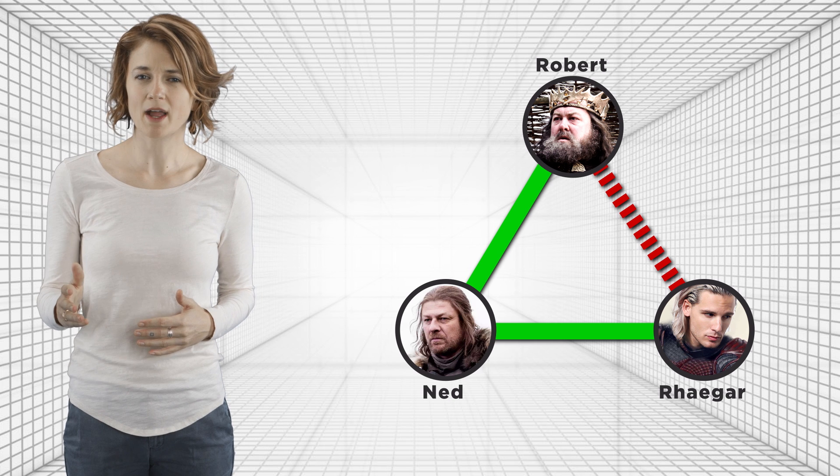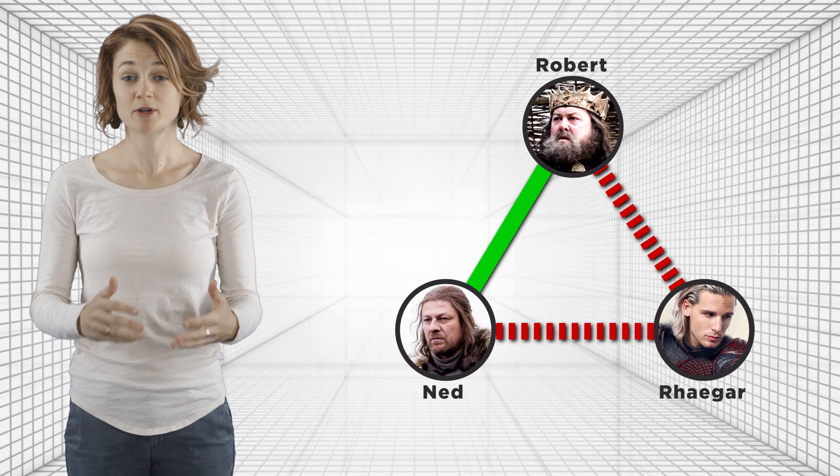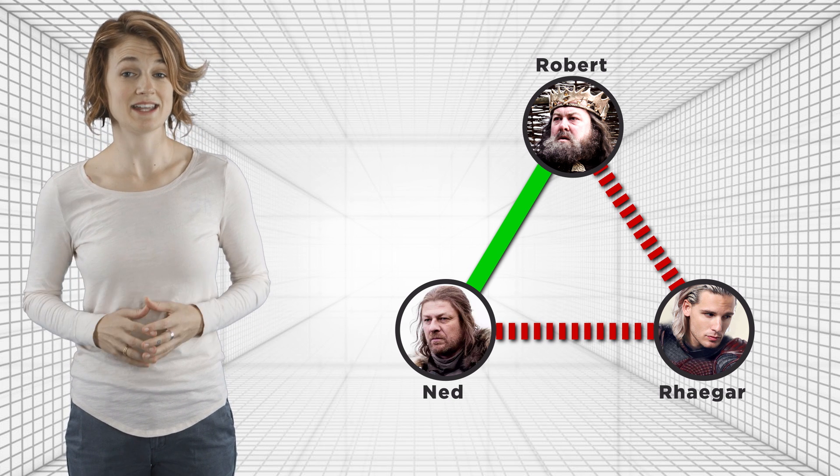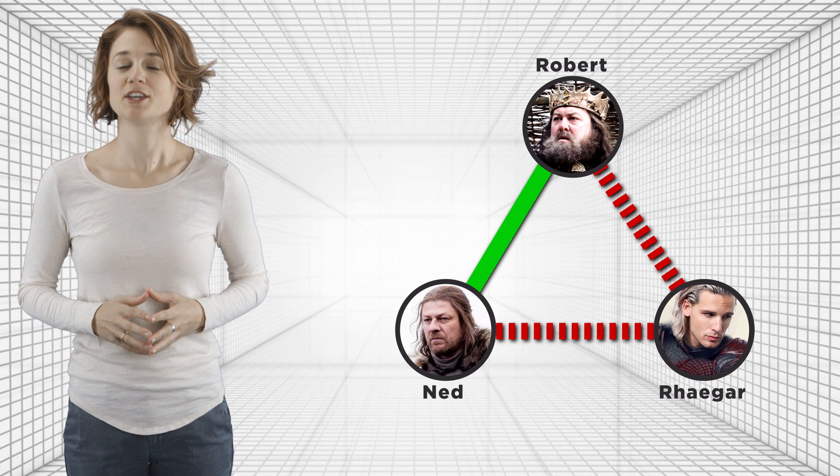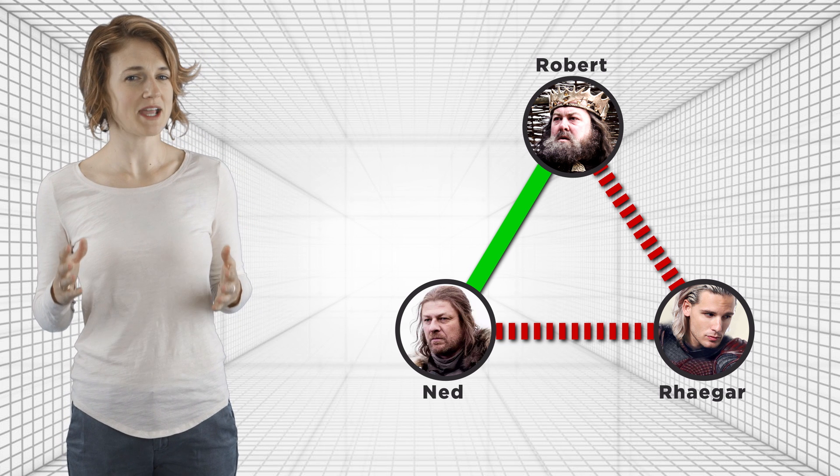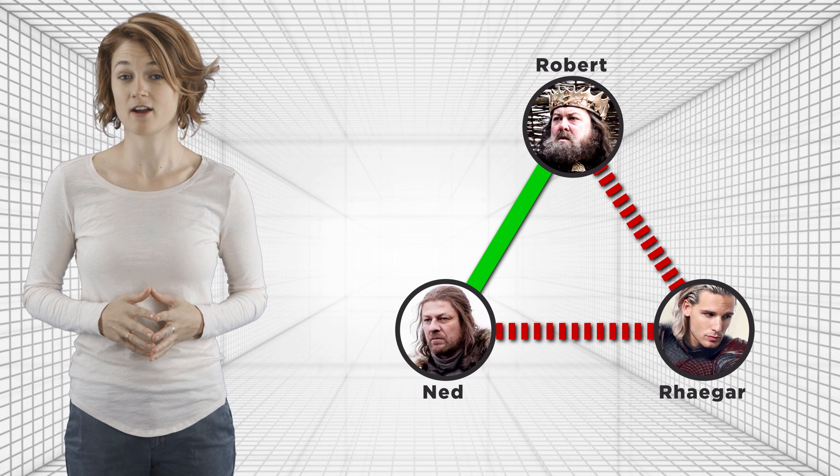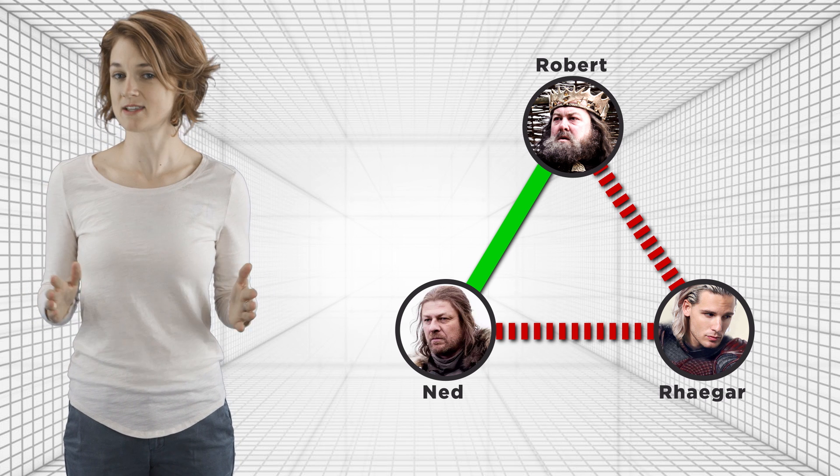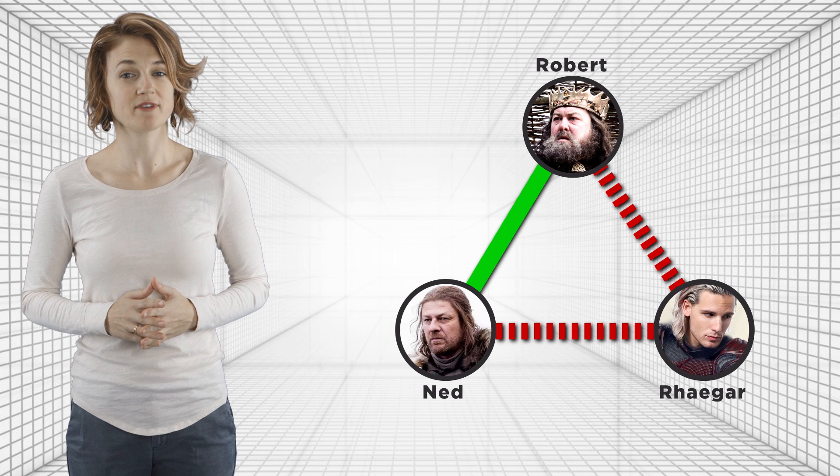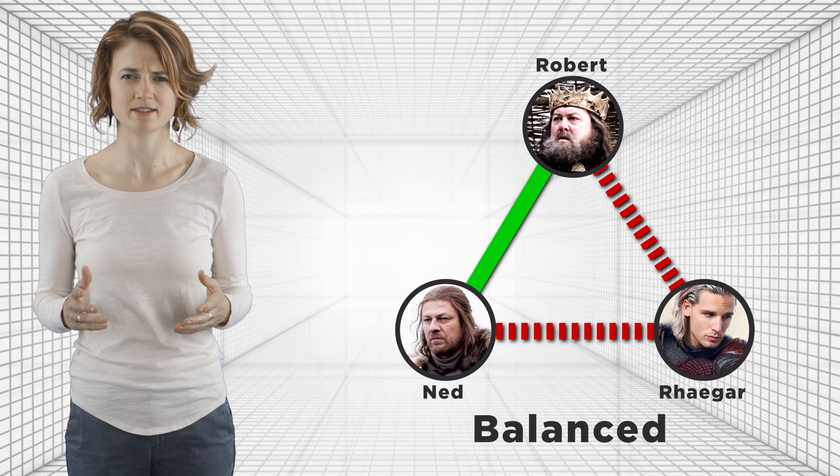What if we have two red edges and one green? Now, Robert and Rhaegar are fighting, and Ned and Rhaegar are fighting. Here applies the saying, the enemy of my enemy is my friend. Ned and Robert agree that Rhaegar is bad news—he's gotta go. No one has motivation to change their relationships, and the triangle is balanced.